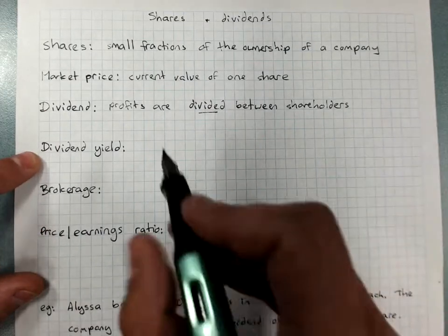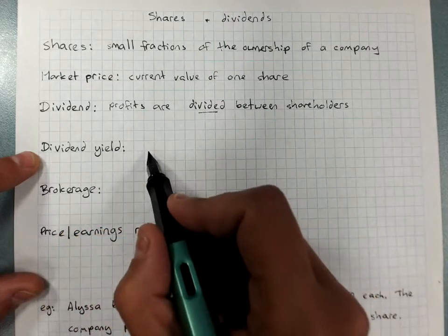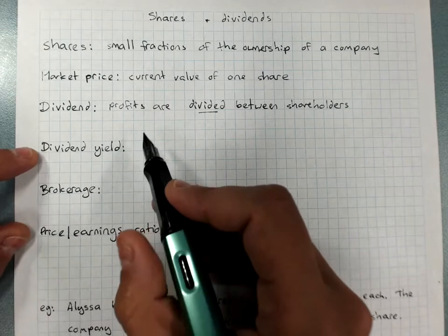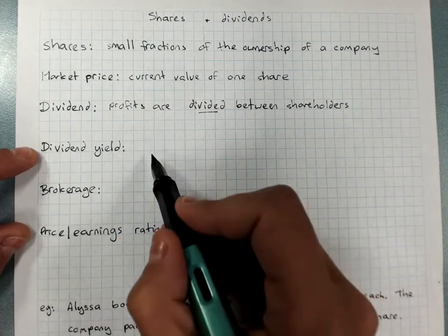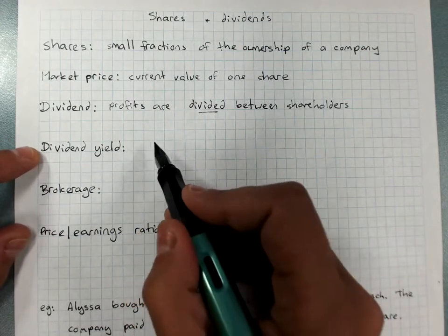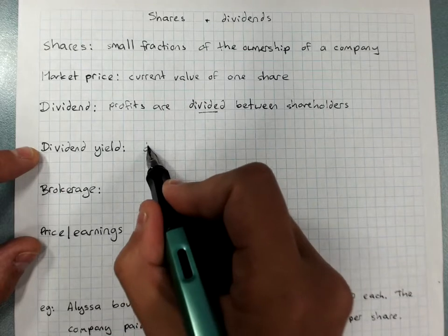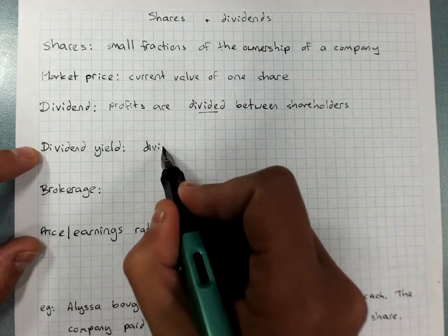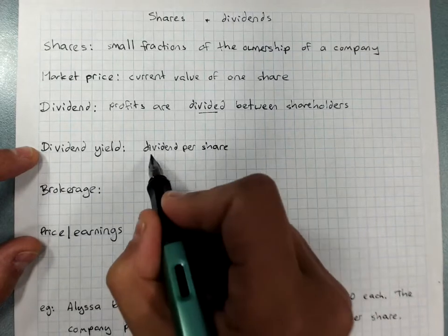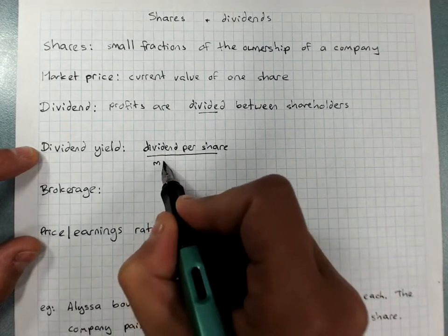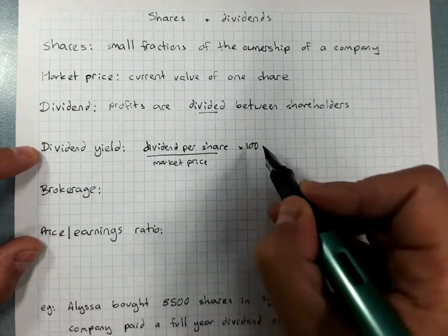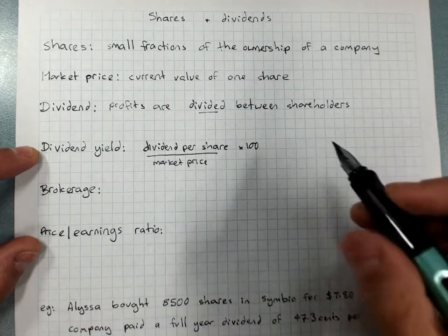Dividend yield is approximately what percentage return you're getting on your investment. So like your interest rate really, because you've had to spend money to get shares, you want to get some money back. It is found by doing the dividend per share divided by the market price times a hundred to find the percentage profit you're making.